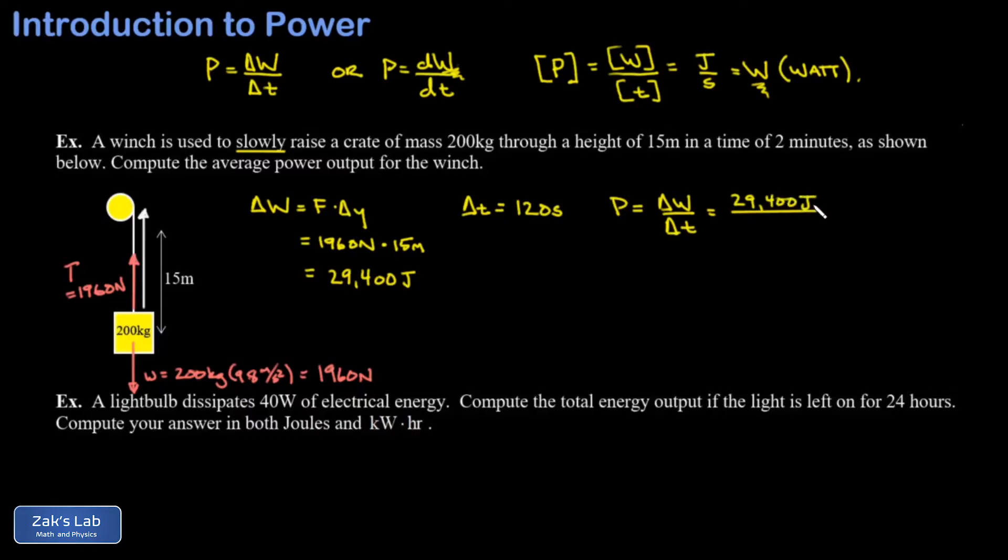In the next example we have a light bulb. We're told it dissipates 40 watts of electrical energy. The wording is a little strange—it should say the power dissipated is 40 watts, or it dissipates 40 joules of energy per second. Given that power of 40 watts, we're asked for the total energy output if the light is left on for 24 hours.